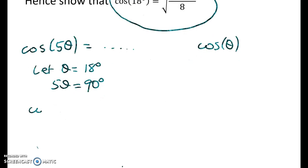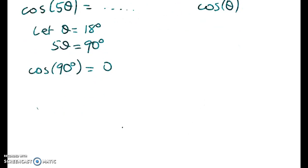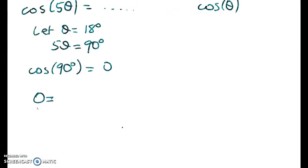And that gives me the very useful result that cos of 5 theta, so cos of 90 degrees, is equal to 0. So we can start off straight away by saying that 0 is equal to 16 times this. And we just have to solve this for cos of 18 degrees.